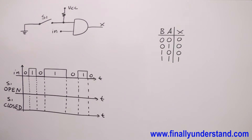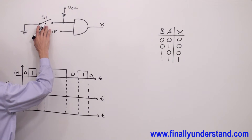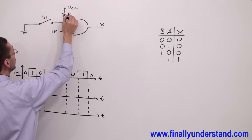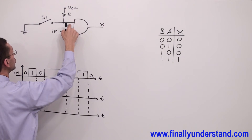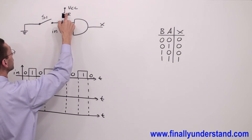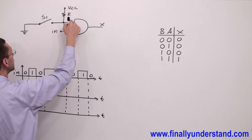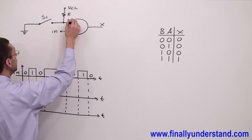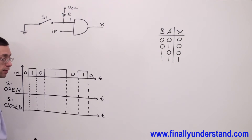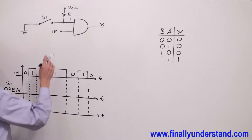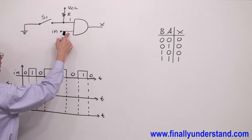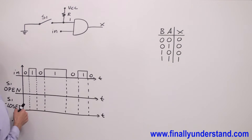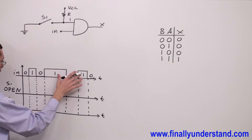When the switch is open, this resistor is a pull-up resistor connected to VCC. So current is going directly to the gate, meaning we have logic one at this first input. Now I need to check what I have at the second input — that will be the input signal, or input waveform.